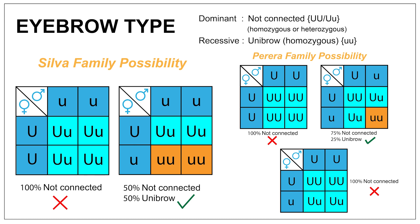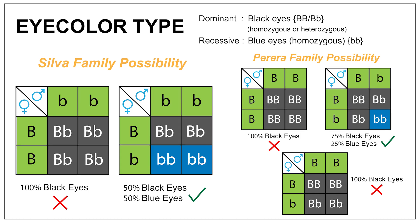According to the Punnett charts for eyebrow type, both families have a possibility of being the real parents of the child. Regarding the genetic characteristic of eye color, the dominant trait is black eyes and the recessive trait is blue eyes. According to the Punnett charts for eye color, both families again have a possibility of being the real parents.